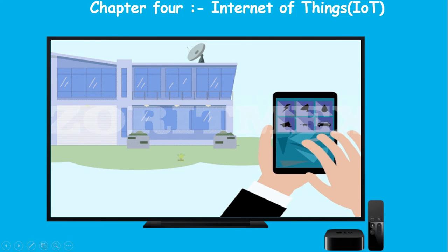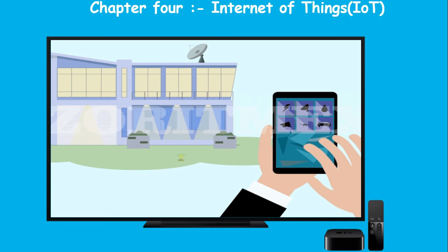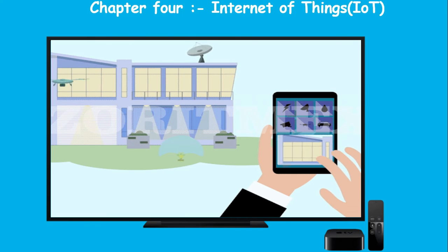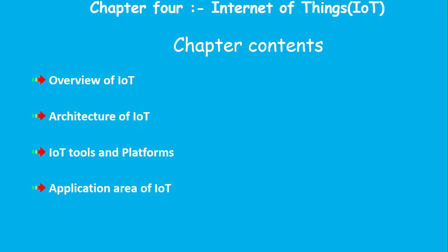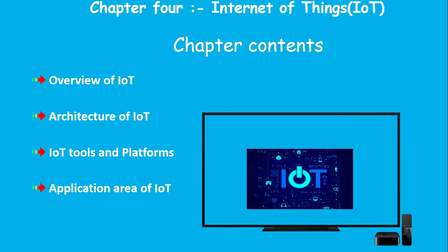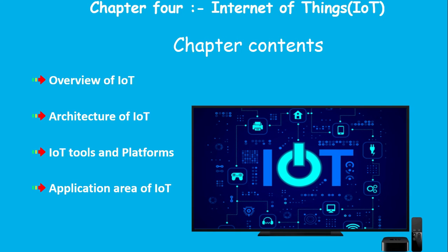The internet communicates and connects devices. This chapter includes an overview of IoT, the architecture of IoT, development of IoT markets, and the application areas of IoT.